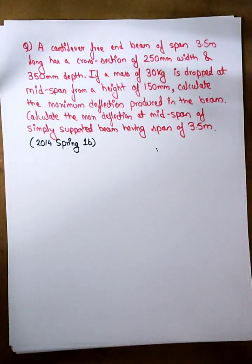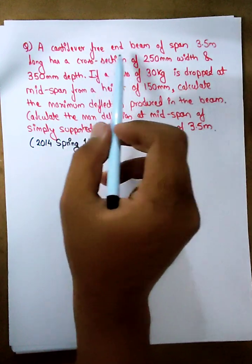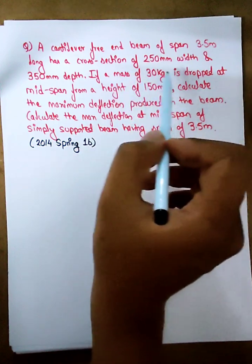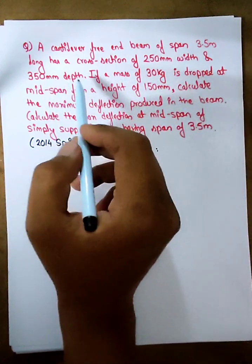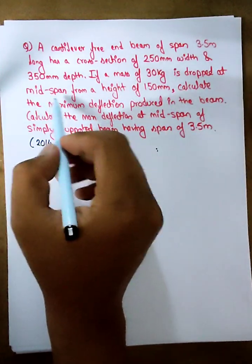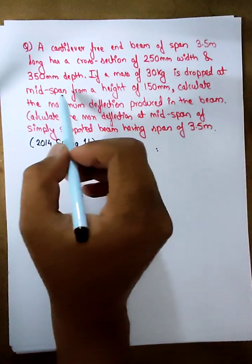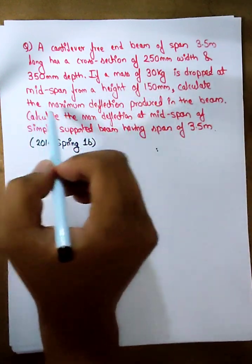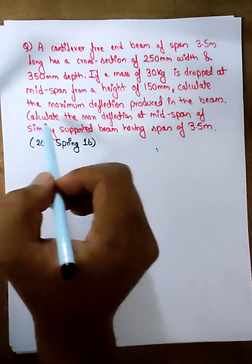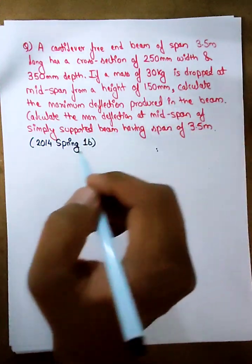A cantilever free-end beam of span 3.5 meters has a cross-sectional area of 250 mm width and 350 mm depth. If a mass of 30 kg is dropped at the mid-span from a height of 150 mm, calculate the maximum deflection produced in the beam. Also calculate the maximum deflection at mid-span of the beam having a span of 3.5 meters.